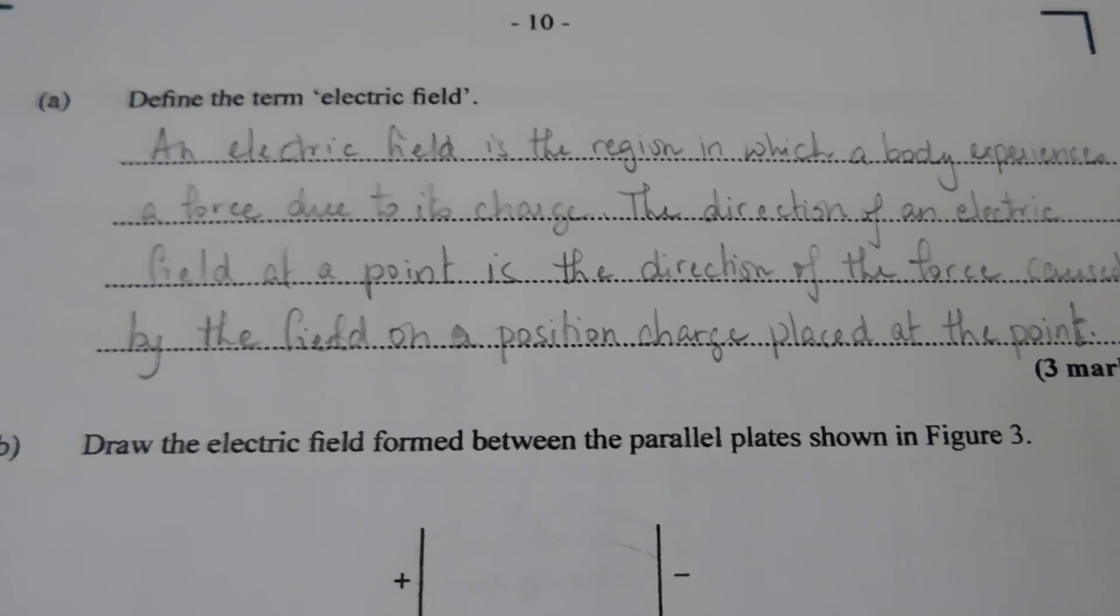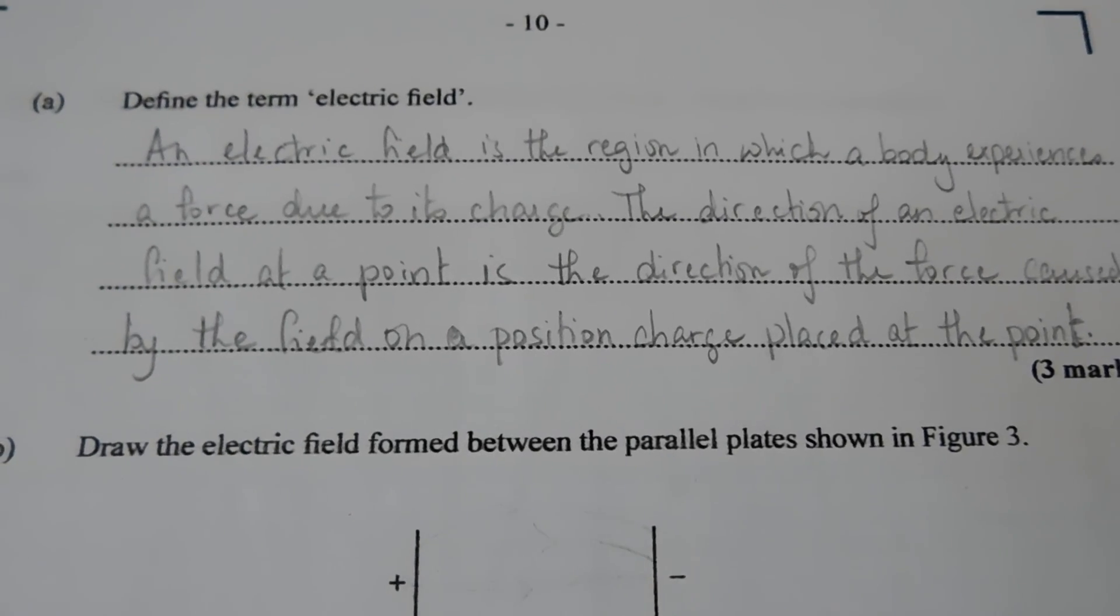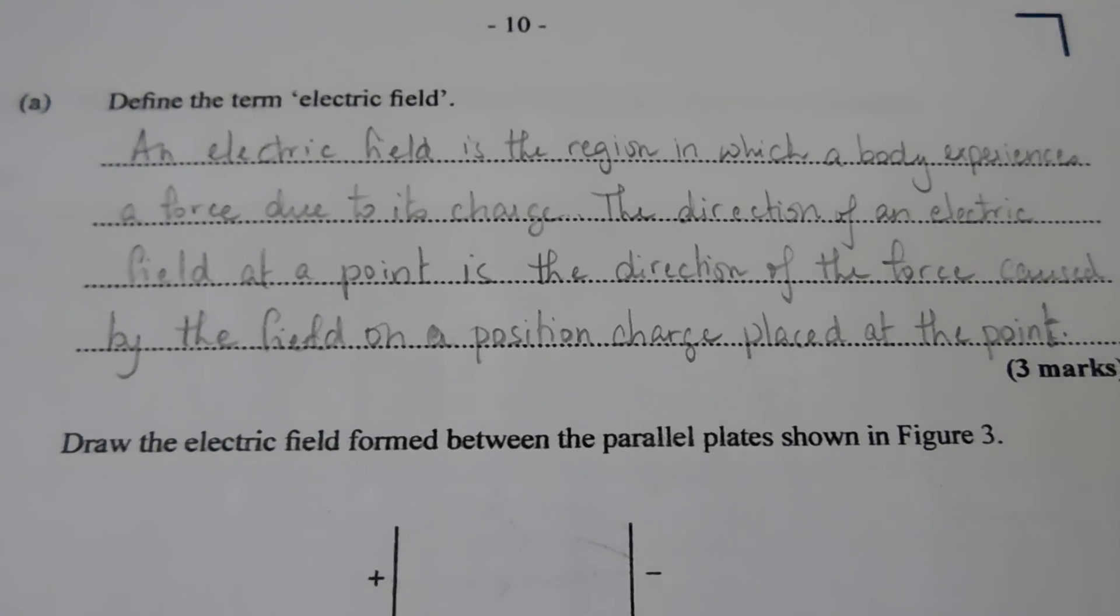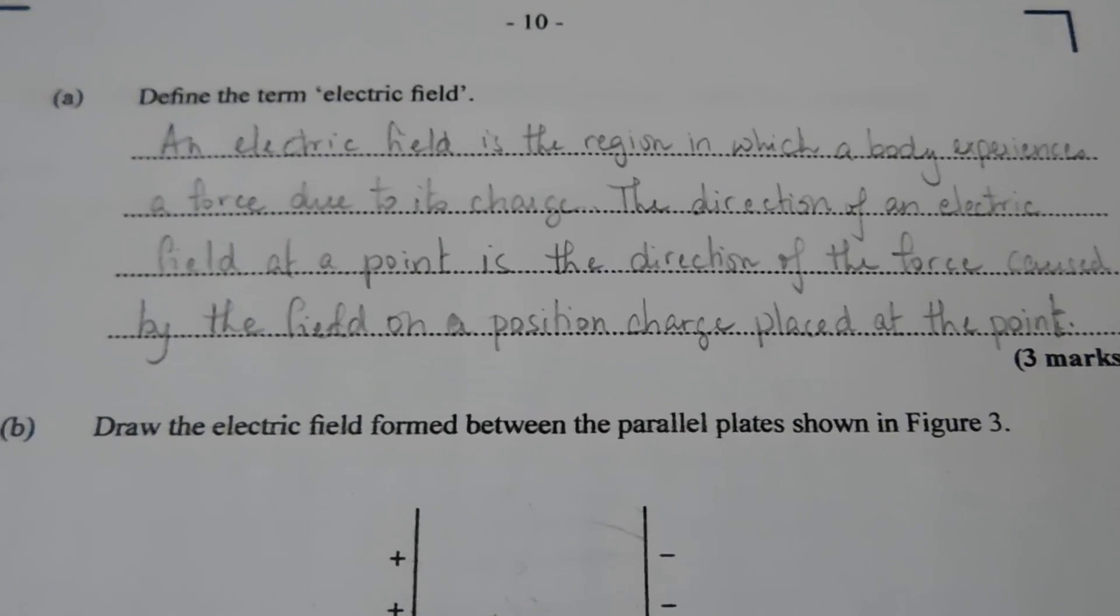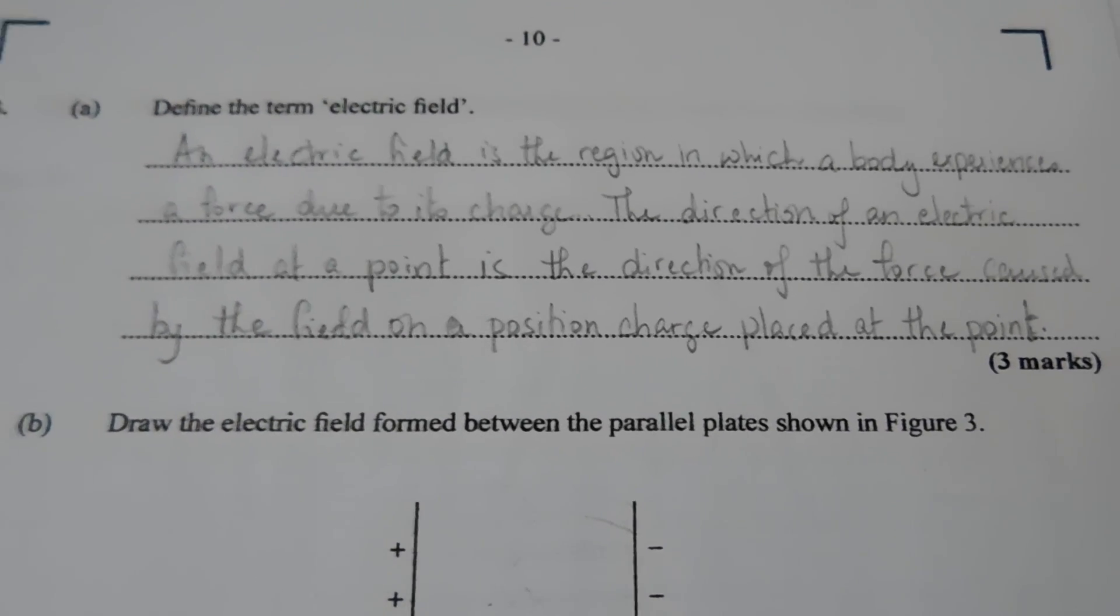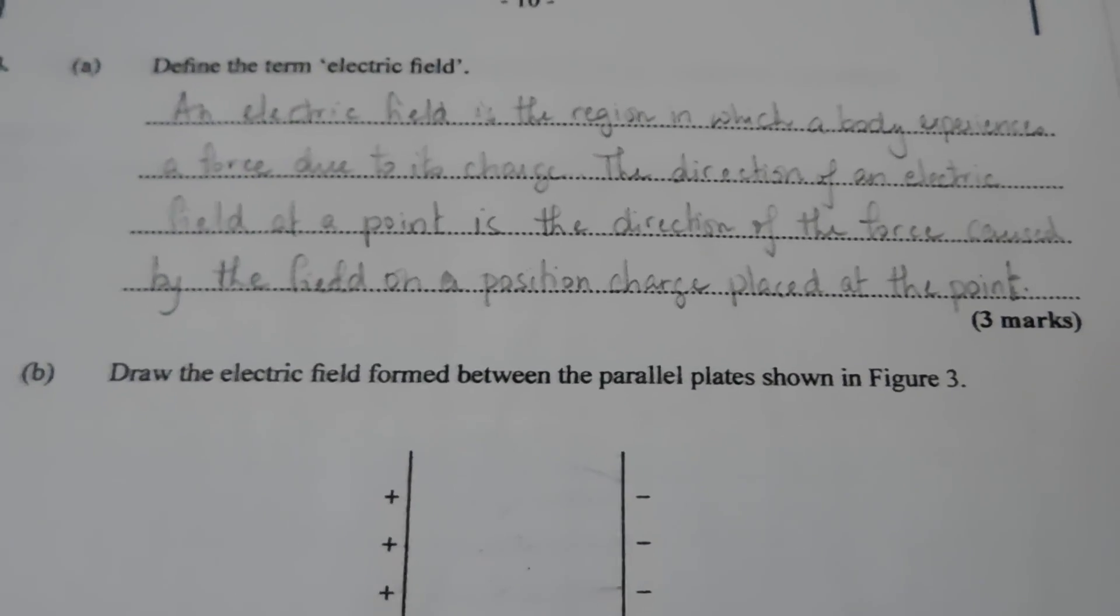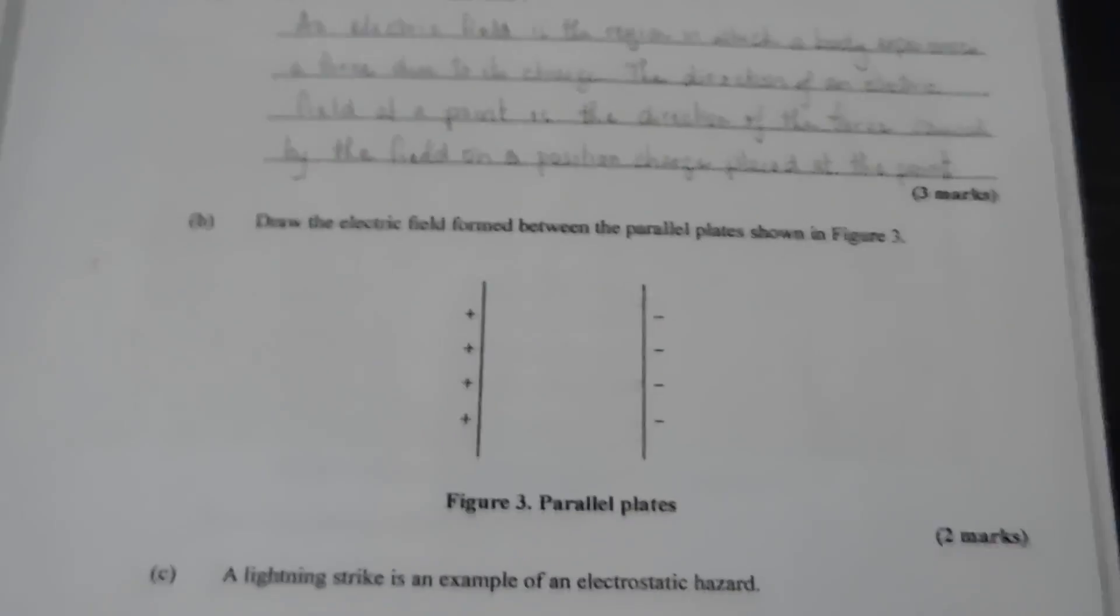So an electric field is the region in which a body experiences a force due to its charge. The direction of an electric field at a point is the direction of the force caused by the field on a positive charge placed at the point.